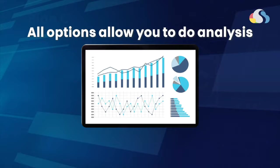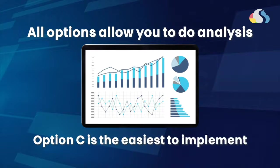Options A, B, and C all give you the data you need to do the analysis. However, Option C is the easiest to implement, and that's what I'm going to propose to PanRite. More importantly, if they use a cloud-based inventory system, it's easy to implement. Once they have the data, they can then re-evaluate which areas need investment or more attention to improve their business.